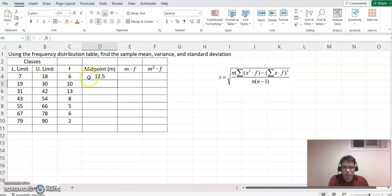12.5 will be the midpoint for the first class. Now go back, click the right bottom corner, hold it and copy down. Those are all your midpoint values for each class.